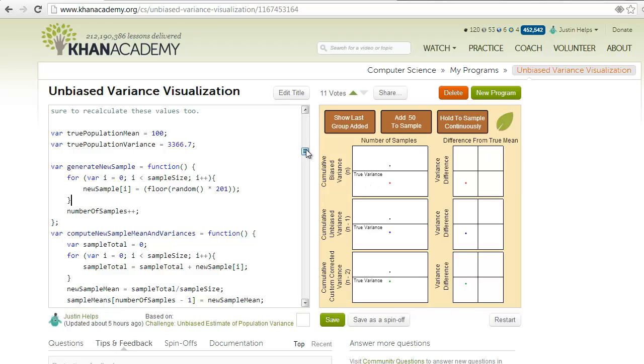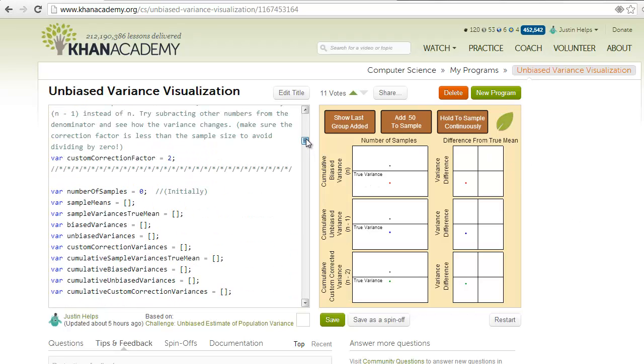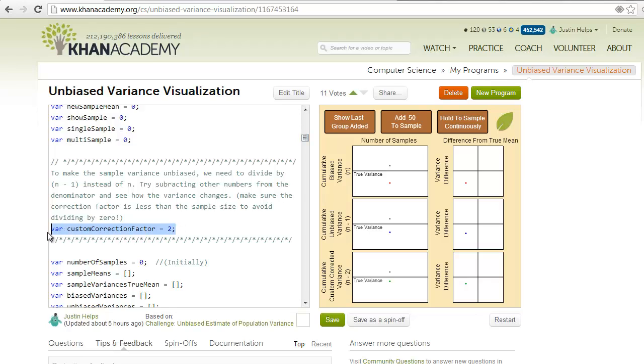And there's a place in the code right here where this is changeable so that it's easy to mess with and experiment with, but for now I just picked n-2.